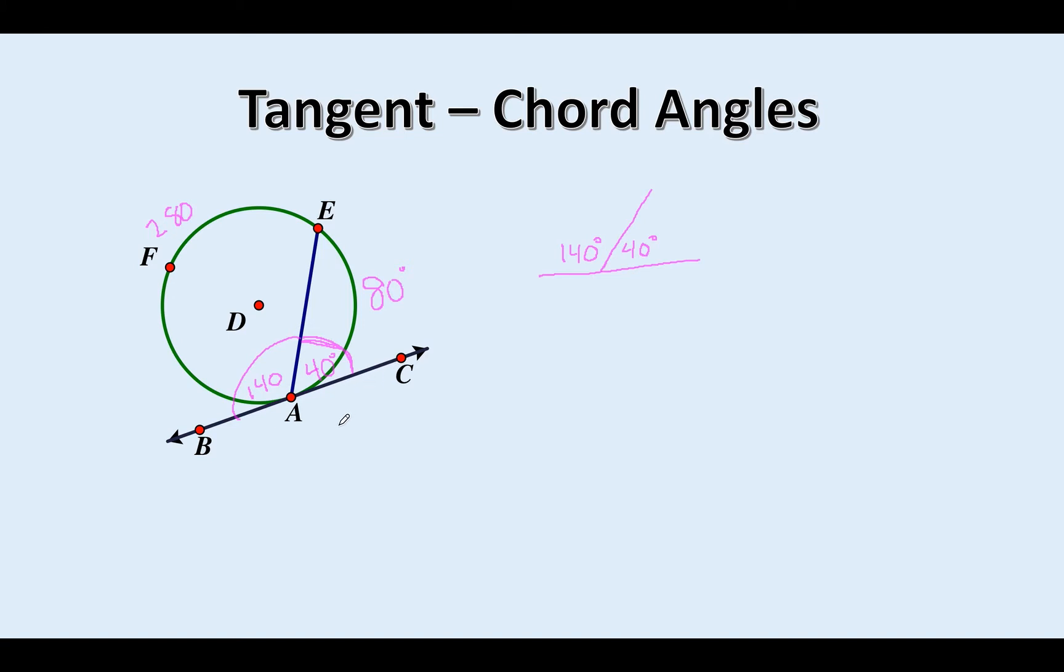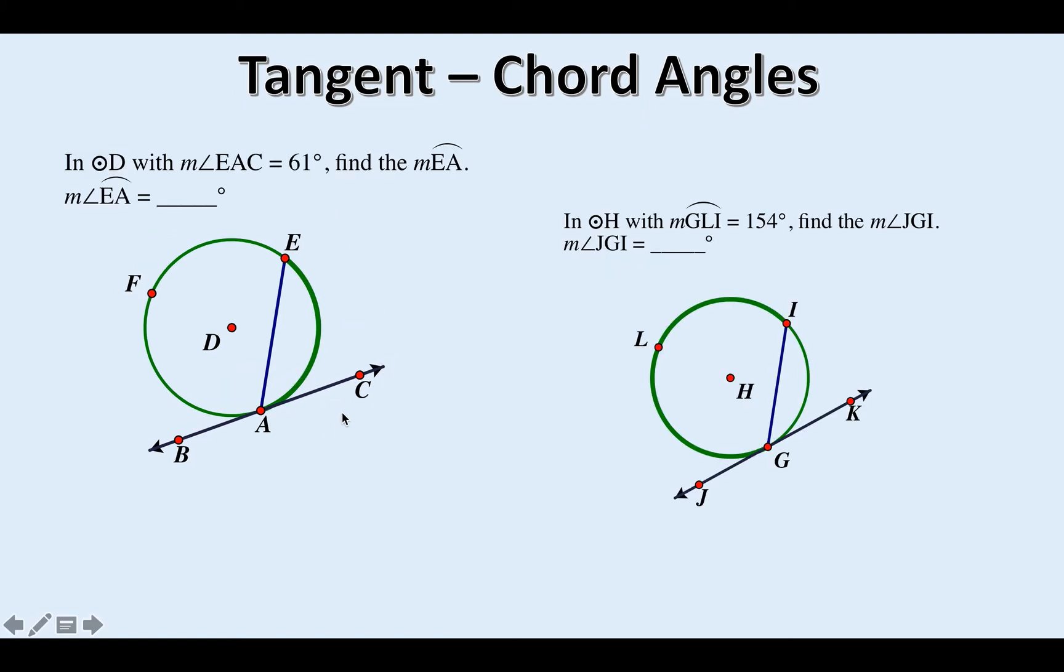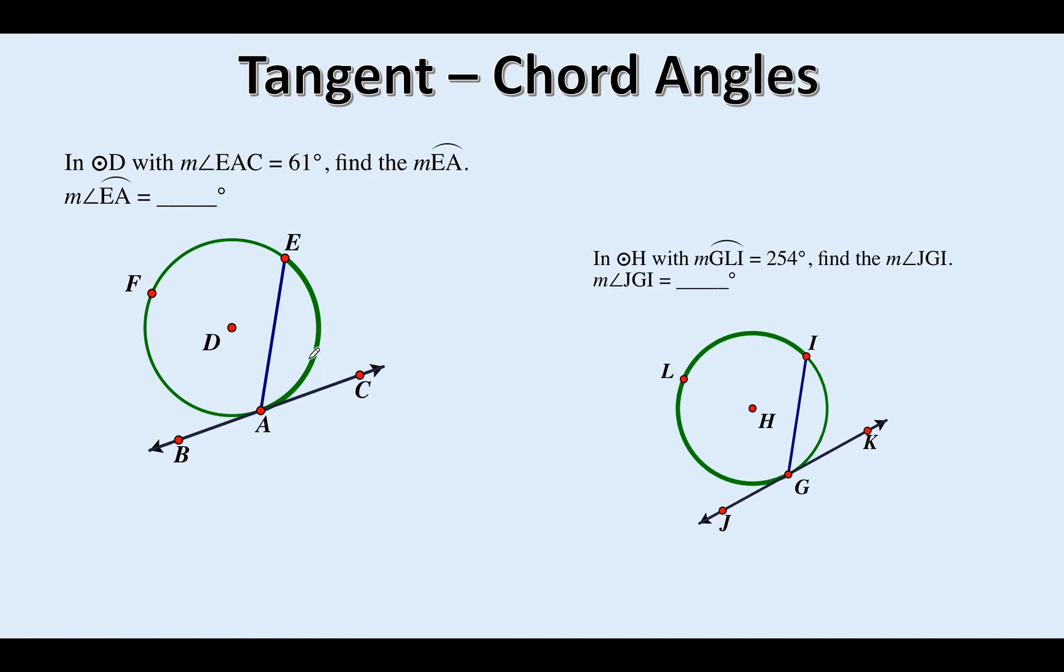So let's do a couple of example problems. Hit pause, see if you can come up with the answers, then come back and check. Angle EAC, here's angle EAC down here. That's 61 degrees. Makes this arc here 122 degrees. Hopefully you came up with 122. So I started with the angle, got the arc.